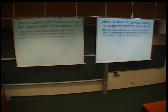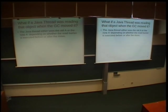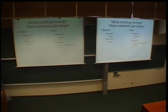Question from audience: does that mean there could actually be more allocated objects than what we actually have, because the GC would allocate a new copy and the Java thread would do it as well? Answer: Yes, but it can do a rollback. The situation is solved by the compare-and-swap operation, because we can read the value of the forward pointer and then compare it to the actual value.